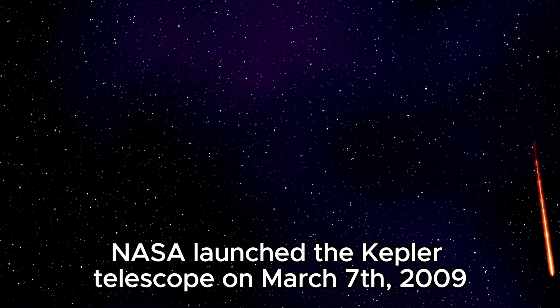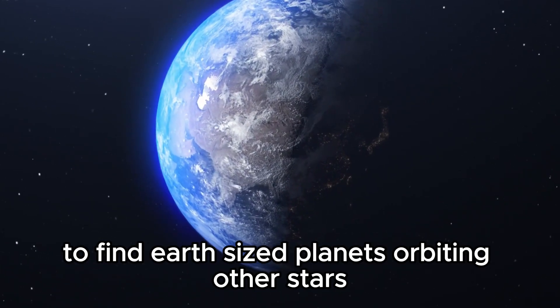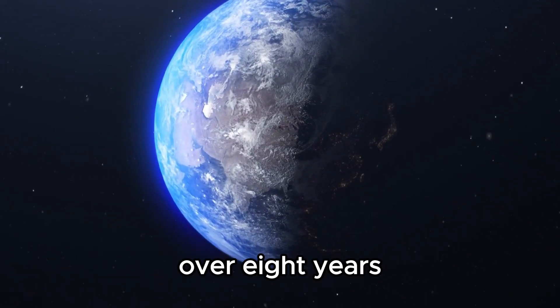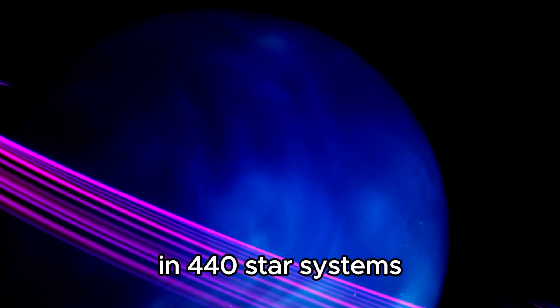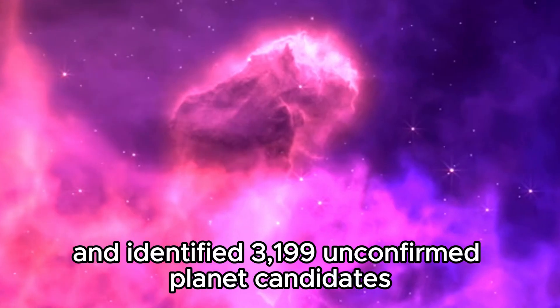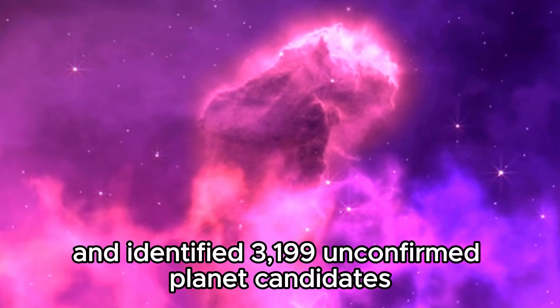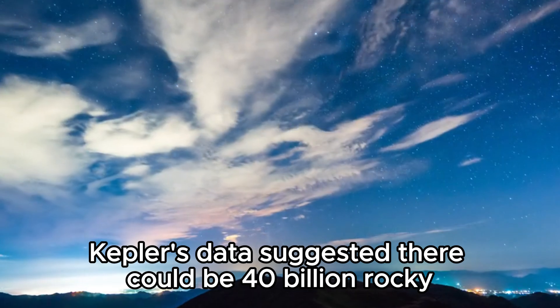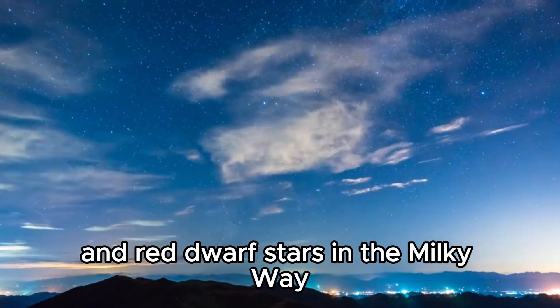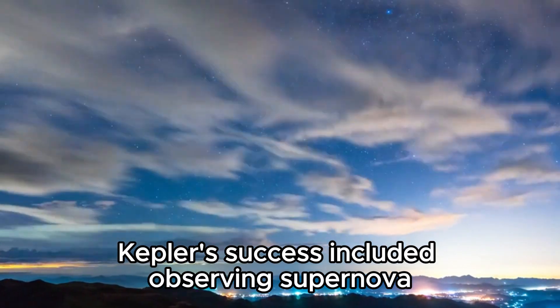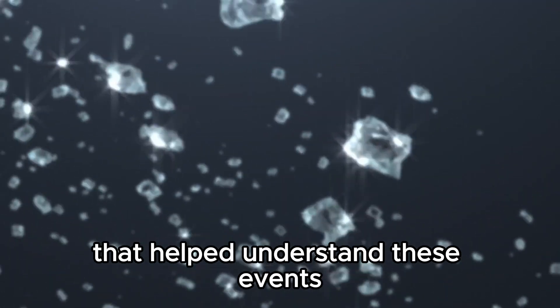NASA launched the Kepler Telescope on March 7, 2009, to find Earth-sized planets orbiting other stars. Over eight years, it confirmed the existence of 1,327 exoplanets in 440 star systems and identified 3,199 unconfirmed planet candidates. Kepler's data suggested there could be 40 billion rocky Earth-sized exoplanets in the habitable zones of sun-like stars and red dwarf stars in the Milky Way.